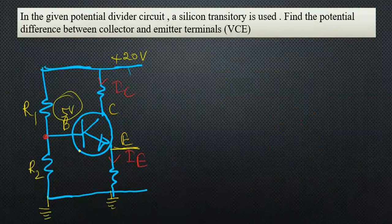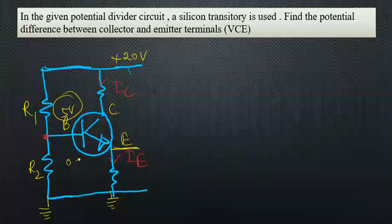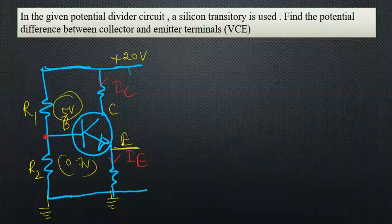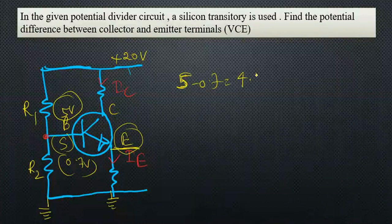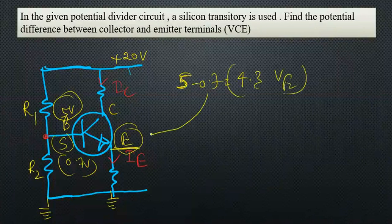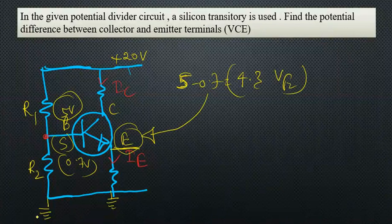Now we need to find VE. We know potential difference VBE is 0.7. The highest potential is at B, which is 5, so 5 minus 0.7 gives us 4.3 as VE, the potential at this point. We have the potential there, then we can find IE.